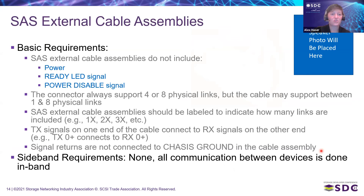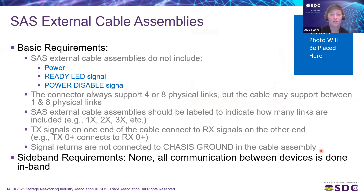Moving to our external cable assemblies, the basic requirements are a little different. They do not include power, ready LED, or power-disable signals. The connector always supports four or eight physical links, but the cable may support between one and eight — meaning the connector comes in blocks of either four or eight links, but you can populate any number between one and eight within that housing. Cable assemblies should be labeled to indicate how many links are included. TX signals on one end connect to RX signals on the other end, and signal returns are not connected to chassis ground in the cable assembly. External cables have no sideband requirements; all communication between devices is done in-band.